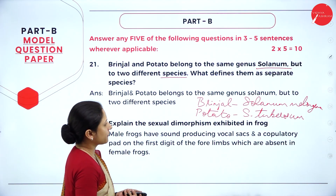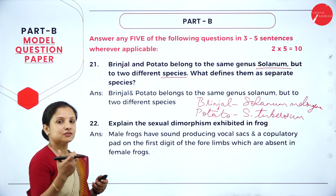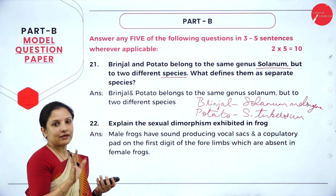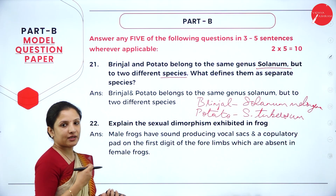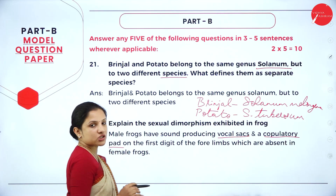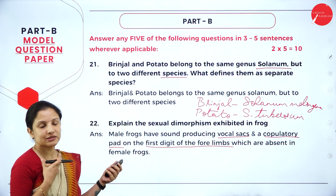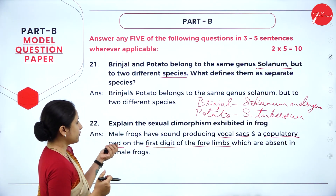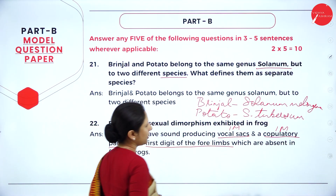Question 2: explain the sexual dimorphism in frogs. Male frogs have vocal sacs and a copulatory pad present on the first digit of their forelimb. Both the vocal sac and copulatory pad are absent in female frogs. Mentioning these two differences earns one mark each, totalling two marks.